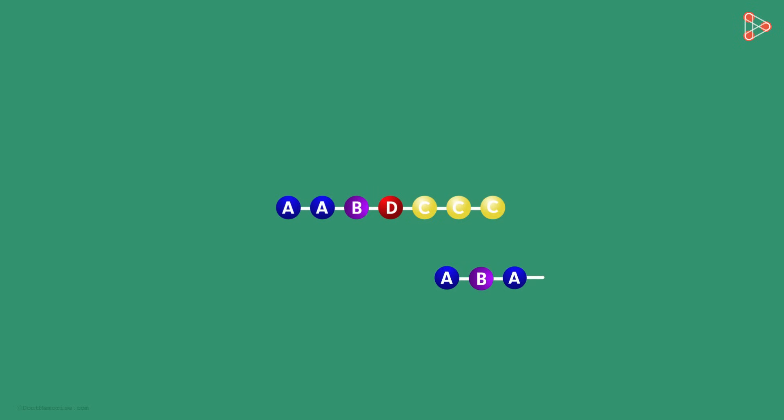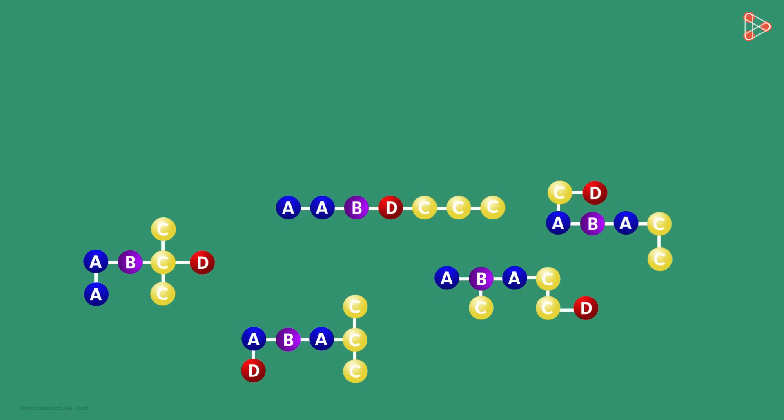Now look at this structure. The number of atoms of each element is the same, but the structure is different. There could be many more combinations that arise if we rearrange the atoms.